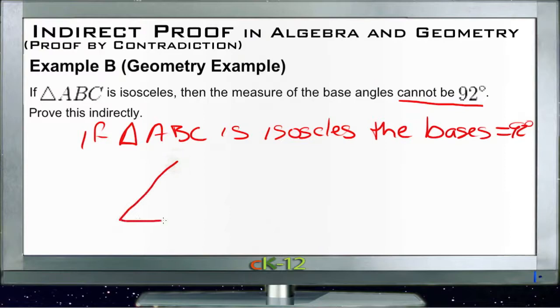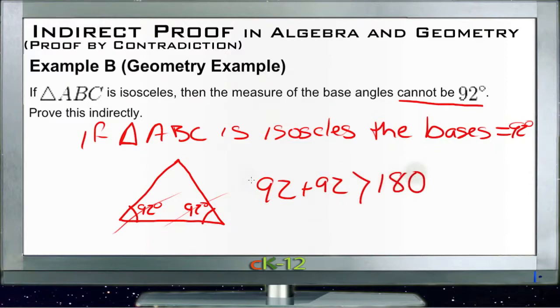So if that's the case, then here's our triangle, and we have two sides, and our base angles here are 92 degrees each, which cannot be the case because 92 and 92 is greater than 180. Without even looking at the third angle, we've already exceeded 180 degrees, which means this cannot be a triangle. So an isosceles triangle can't have bases that are equal to 92 degrees. Therefore it must have bases that cannot be 92 degrees, and we've proven our original statement by contradiction.